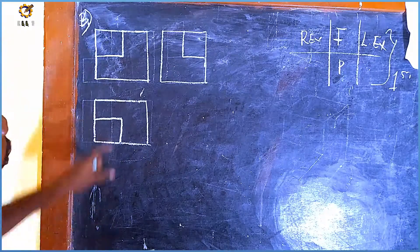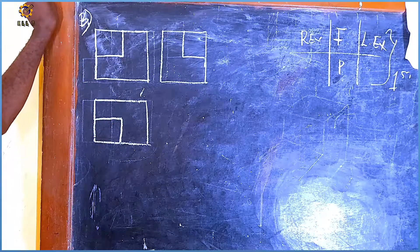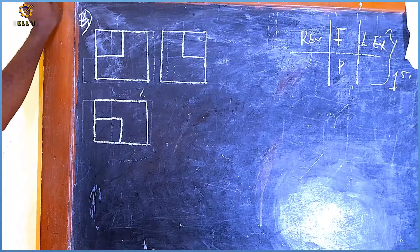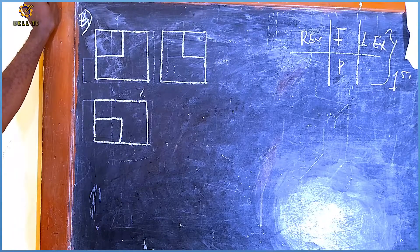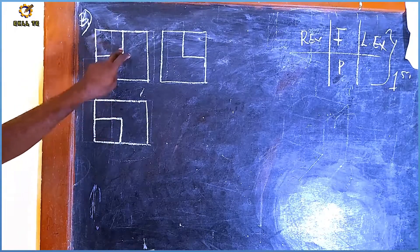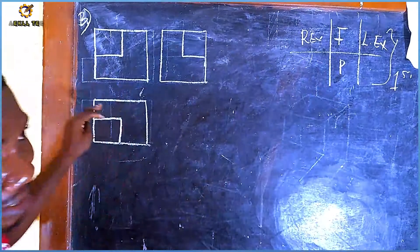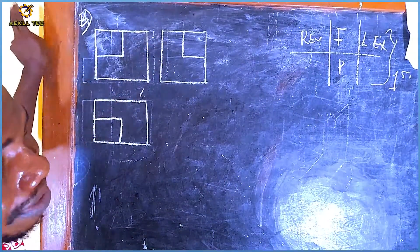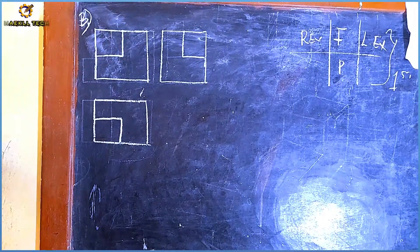Looking at this drawing in the graphic, the first thing you need to determine is what projection it is in. This is in first angle projection. Take note: irrespective of whether it is first or third angle, your plan is usually isolated. Only the front view has something beside it — even in third angle, the plan is isolated. The front view is the one carrying the end view on both sides or one side.